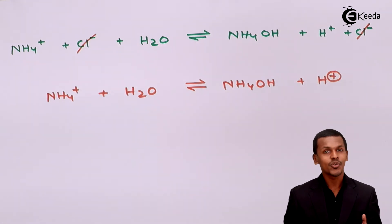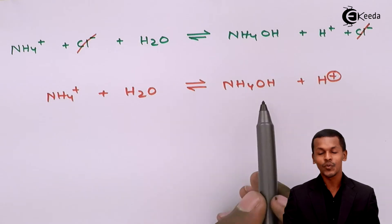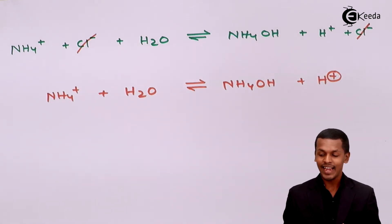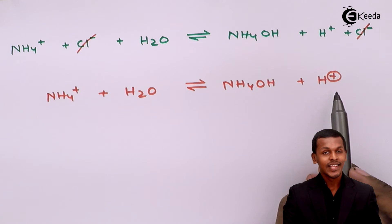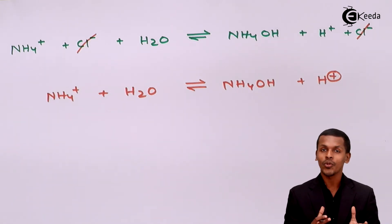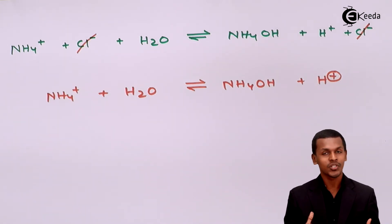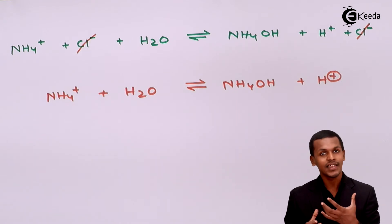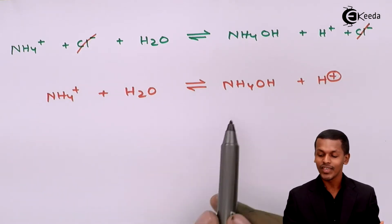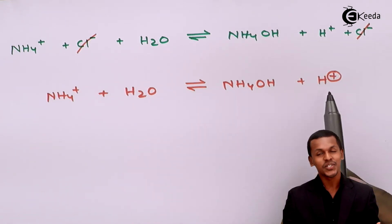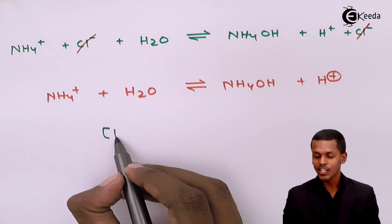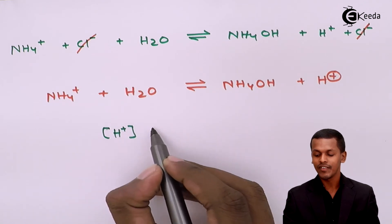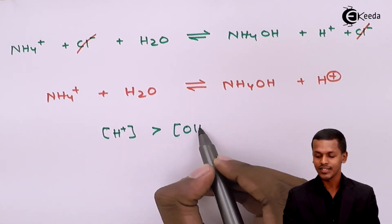When the salt reacts with H2O, it forms the weak base NH4OH, and we also get H+ ions in solution. The OH- from water is being utilized to form the weak base, while the concentration of H+ goes on increasing — meaning H+ ion concentration is comparatively greater than that of OH-.